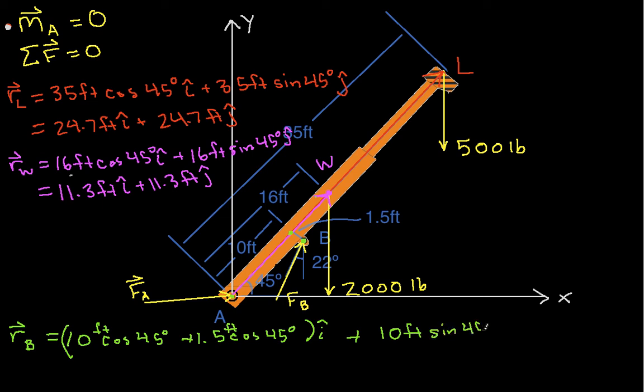The y component is going to be 10 feet sine 45 degrees minus 1.5 feet sine 45 degrees. So I'm basically going from here up to this point and then back down to this point. And that's j-hat. And so when you work that out, you get that this is 8.13 feet i-hat plus 6.01 feet j-hat.